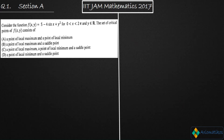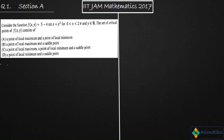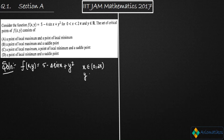Firstly we need to understand what is the meaning of a critical point. We have the function f(x,y) = 5 − 4sin(x) + y². Here x is in the open interval 0 to 2π and y belongs to ℝ.